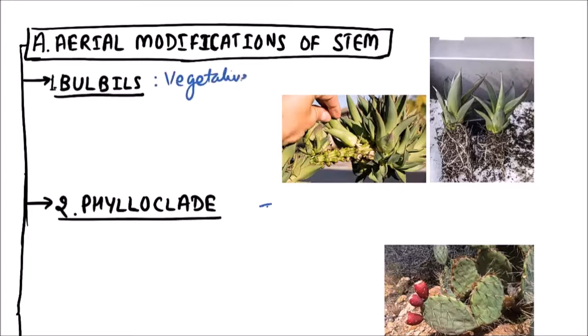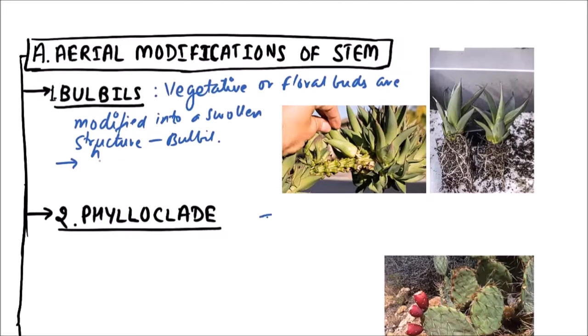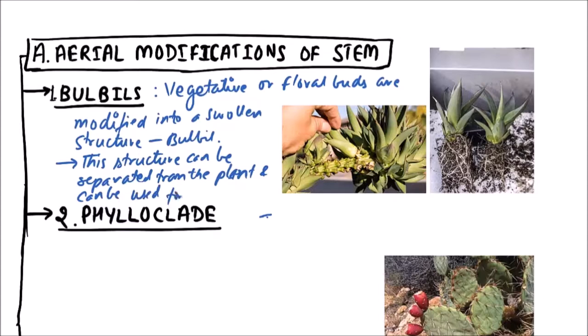Vegetative or floral buds are modified into a swollen structure that is bulbil. This structure can be separated from the plant and can be used for vegetative propagation.